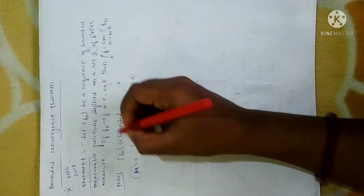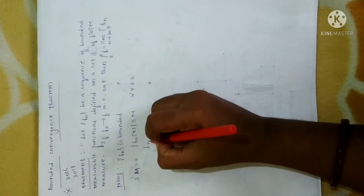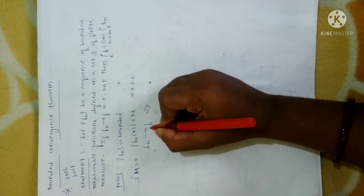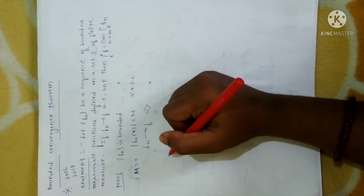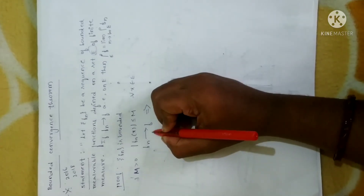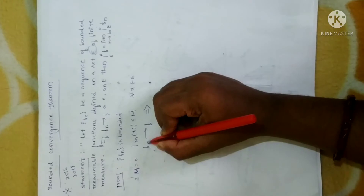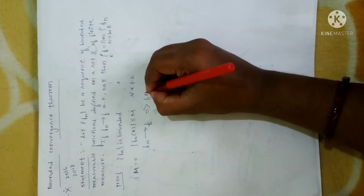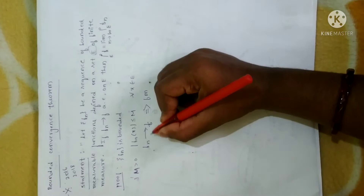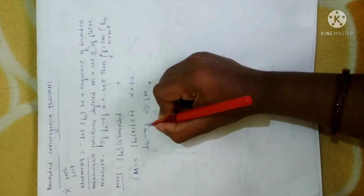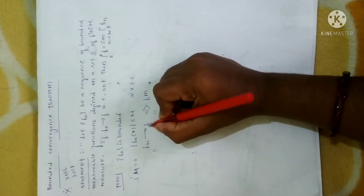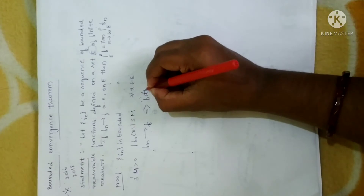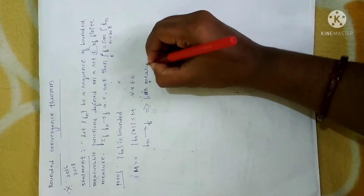Moreover, the given data is that Fn is converging to F almost everywhere. This implies, as I told you, that for every convergent sequence, if Fn converges to F, then F is measurable — this is Littlewood's second principle. So F is measurable.